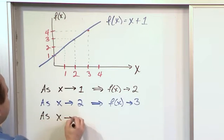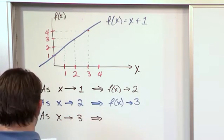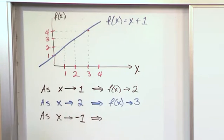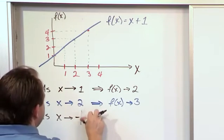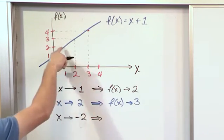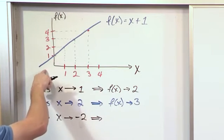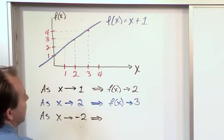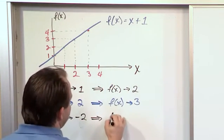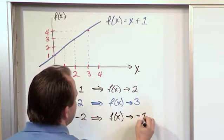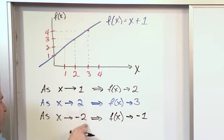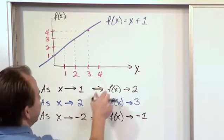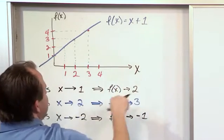Let's take another example. As x approaches negative 2, we don't have the graph extended that way, but you can see: negative 2 + 1 = negative 1. So as x approaches negative 2, f(x) would approach negative 1. Again, in terms of the limit, we don't ever quite get there — the function just approaches this value but never quite reaches it. We take negative 2, plug it in, add 1, and get negative 1.